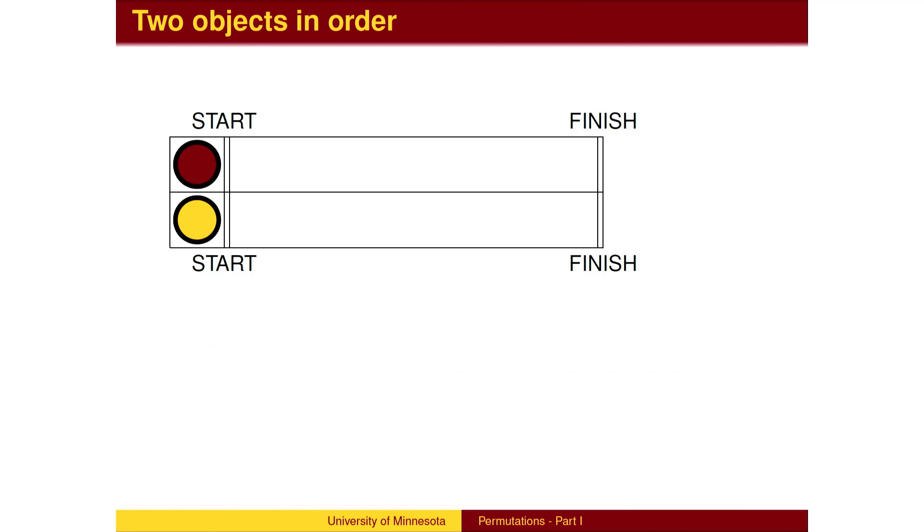Suppose we have a race between two runners, one representing the maroon team and another representing the gold team. In how many different orders can they finish? In this case, the answer is simple. Either maroon beats gold or gold beats maroon, so there are two different orders.